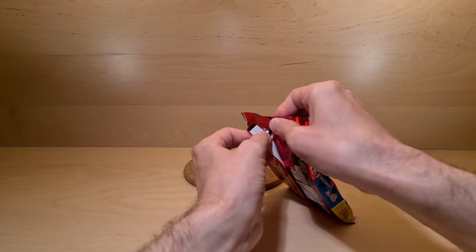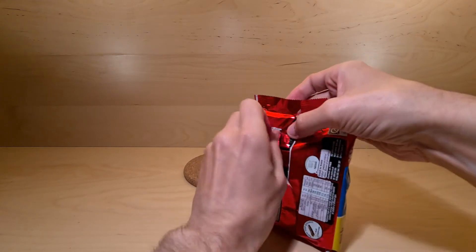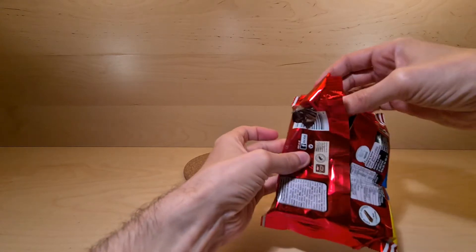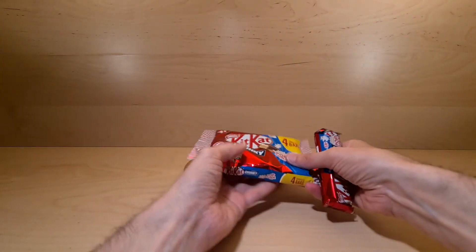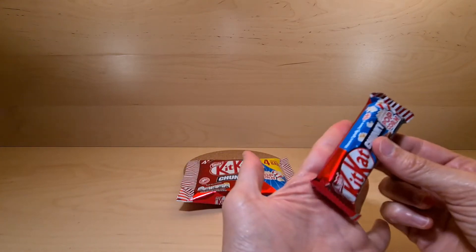Thoughts and comments below. We're going to reveal these teeny tiny Chunky Kit Kats. They're tiny, like a really fat finger.